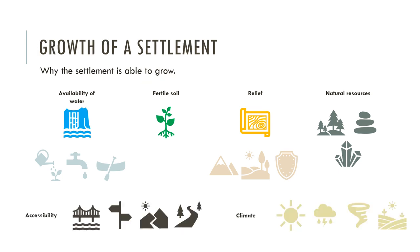Also consider accessibility — are there transport links, rivers for transport, and things like that? Once you've got those factors and include climate, you can think about why the settlement grew. Lots of fertile soil might attract people to work as farmers and support a large population. A good climate can support growth. Natural resources provide materials to build and grow the settlement, and accessibility means easier trade with other places, making it more attractive for people to move to.